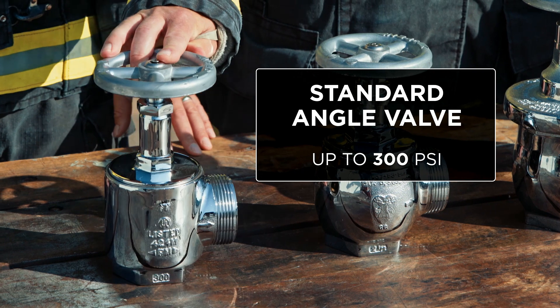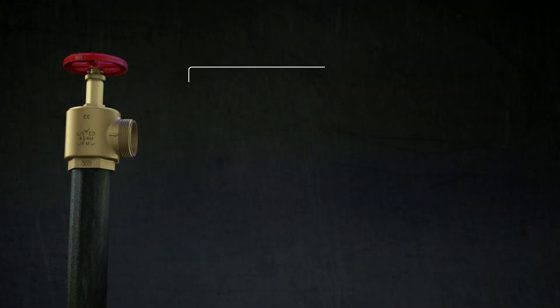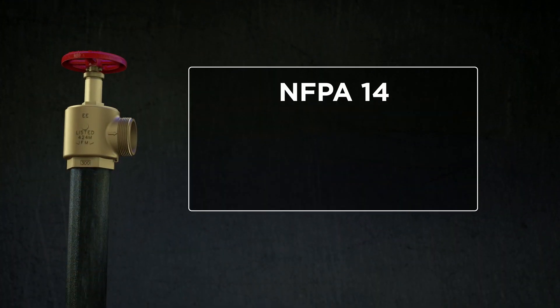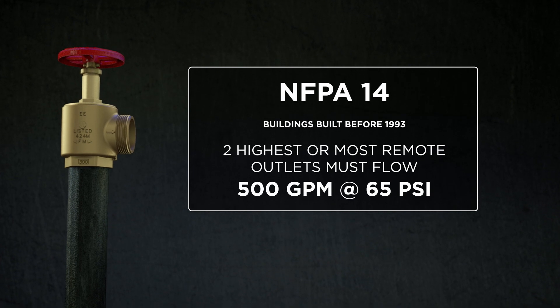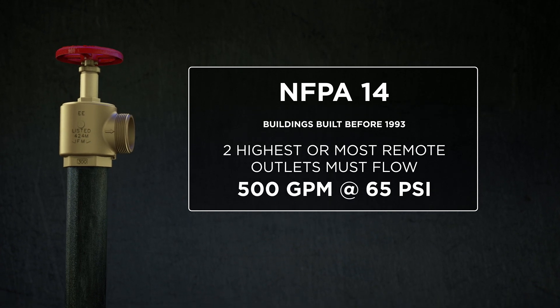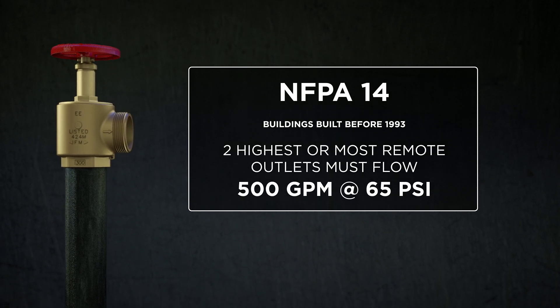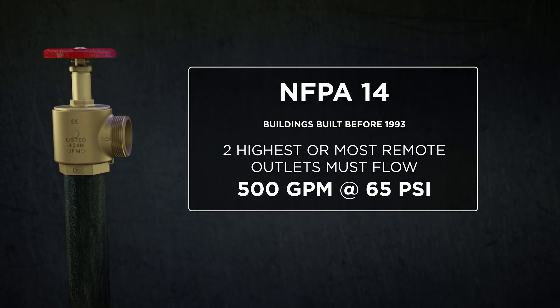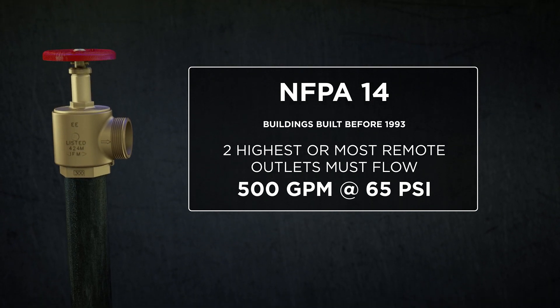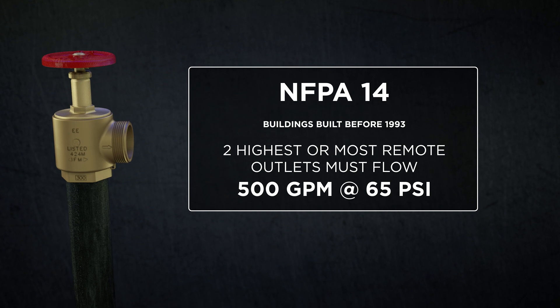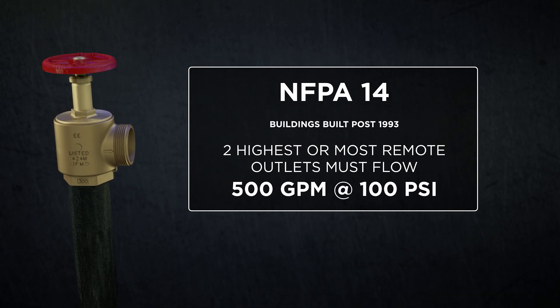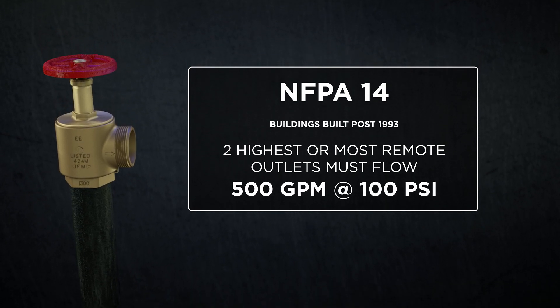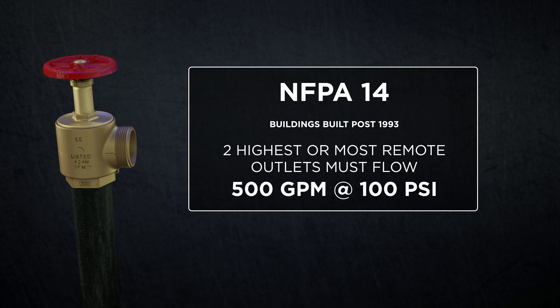Fire code requirements for pressure and flow for standpipe hose valve outlets is driven by NFPA 14. NFPA 14 states that the top two outlets, or most remote outlets in a building, must flow 500 GPM at 65 PSI for buildings built prior to 1993. Buildings built post-1993, the requirement is 100 PSI residual pressure for the topmost or most remote outlets flowing 500 GPM.